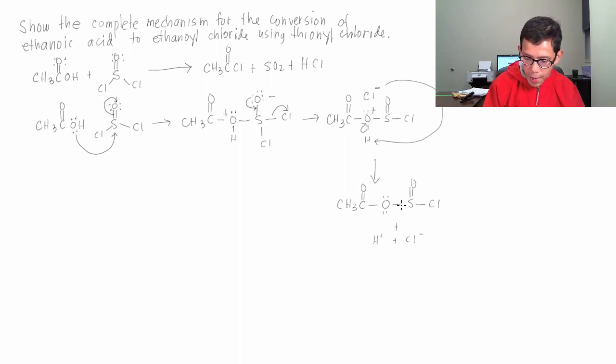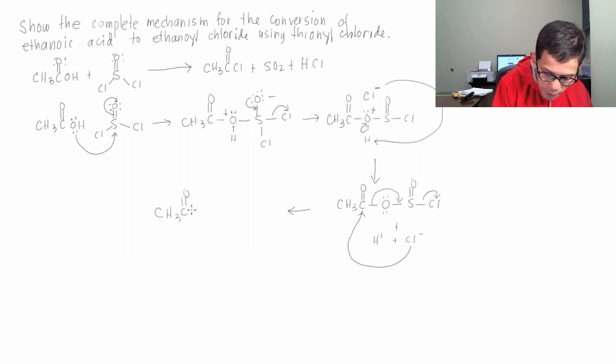Next is that chloride attacks the C double bond O carbon, and that bond between carbon and that oxygen forms a second bond between that oxygen and that sulfur, and this one here goes with a Cl. And this is what you're gonna get: CH3, C double bond O, now you have a bond to Cl. We have formed our ethanoyl chloride. And you form S double bond O double bond O, SO2, and of course you have that H and that Cl, plus HCl.